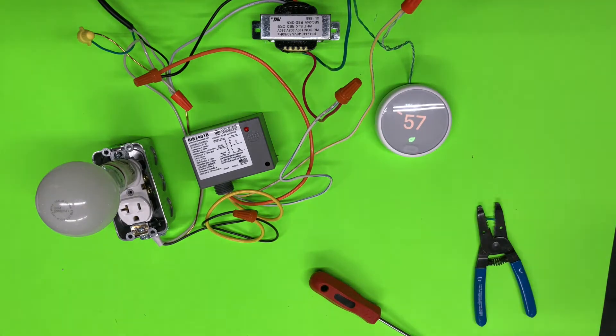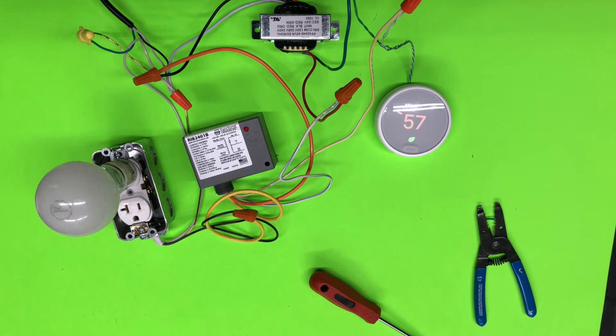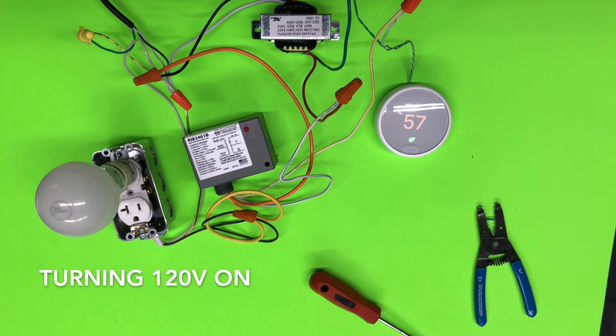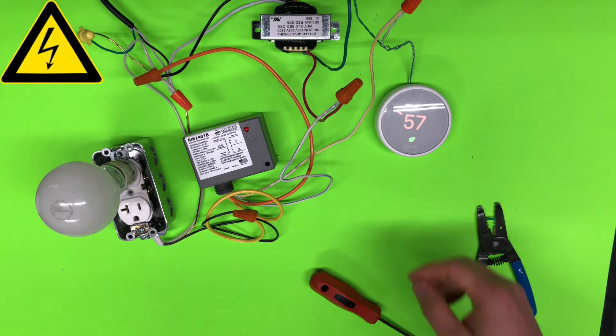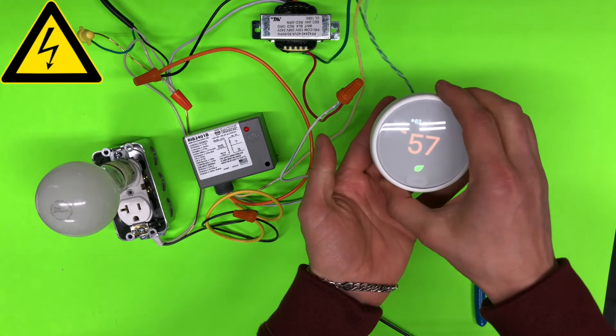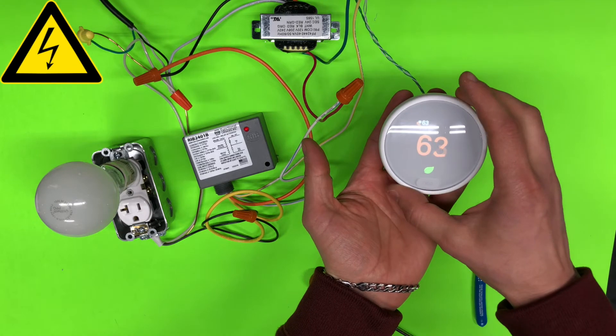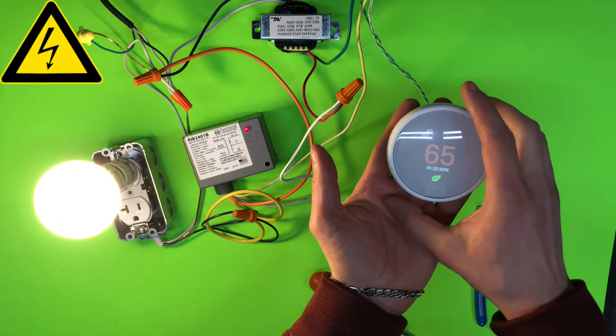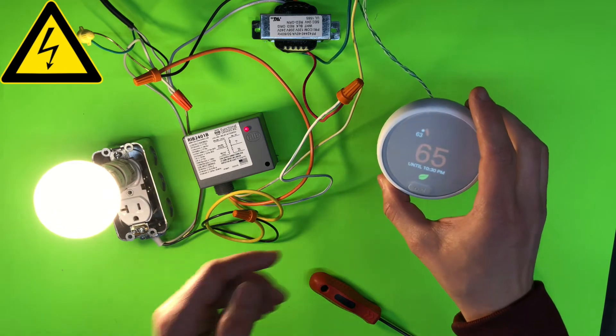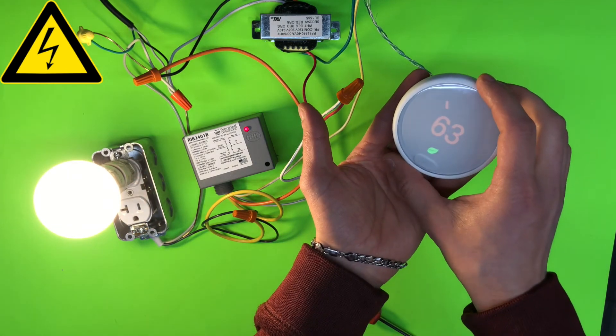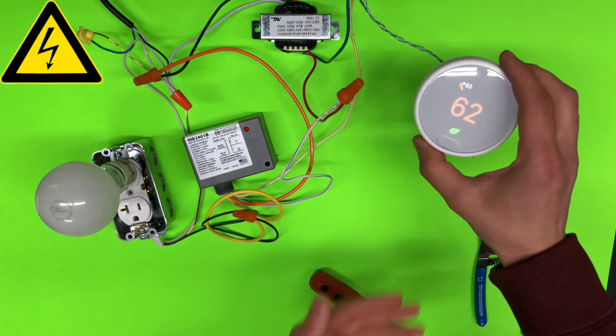So thermostat is below, so we're not calling for heat. So let me connect our input again to 110 volts. So now when I turn temperature, it will energize our load. So here's how it works.